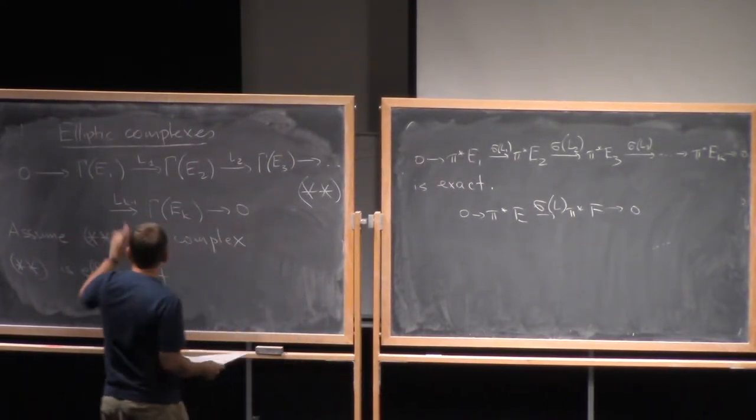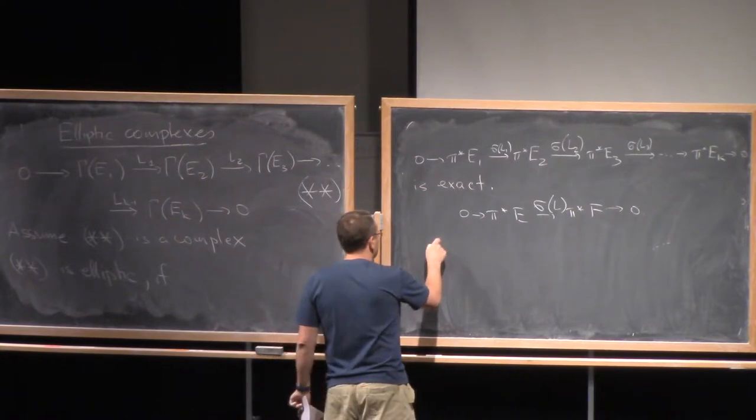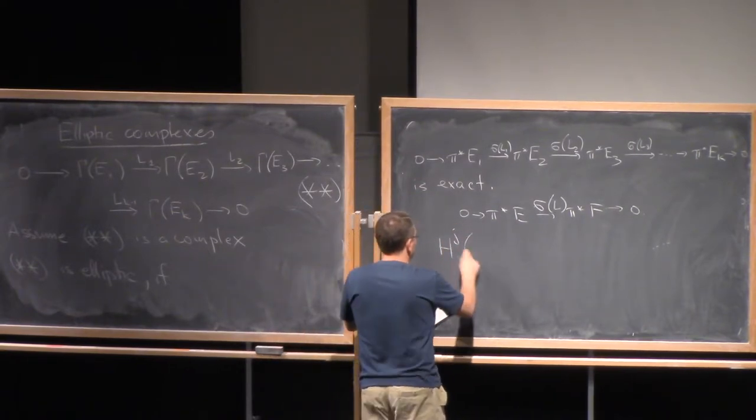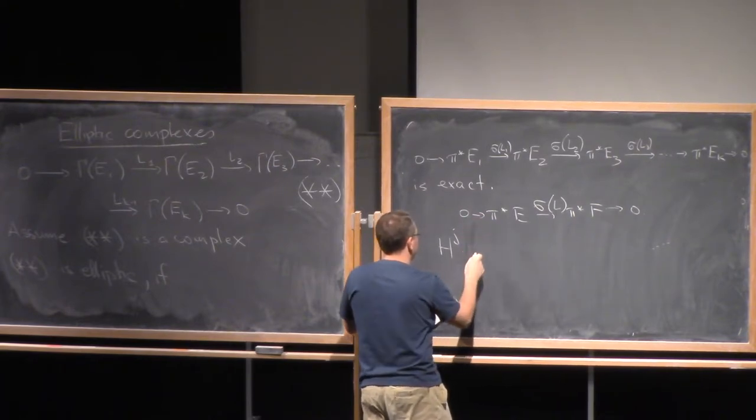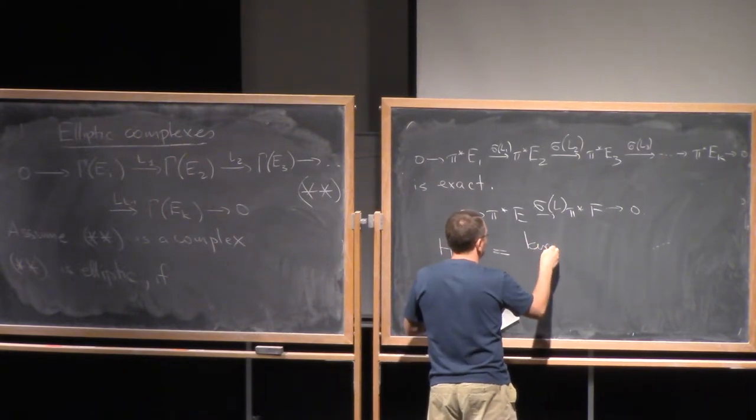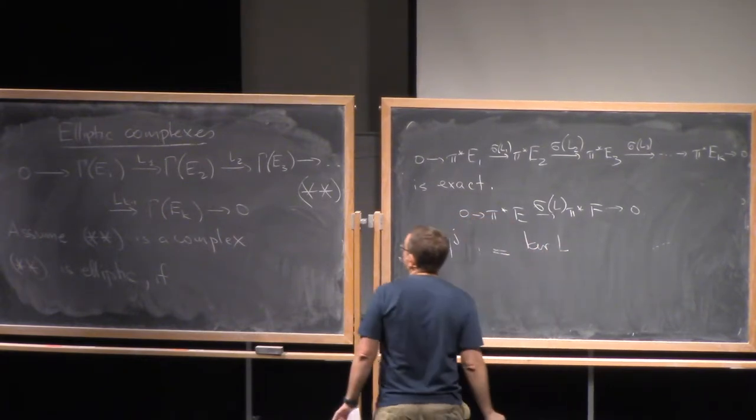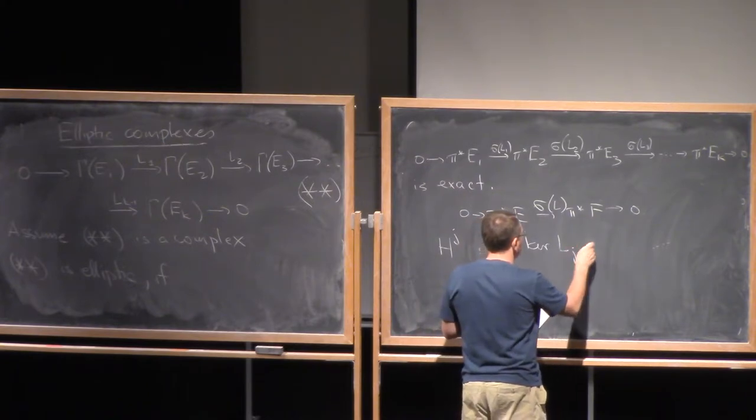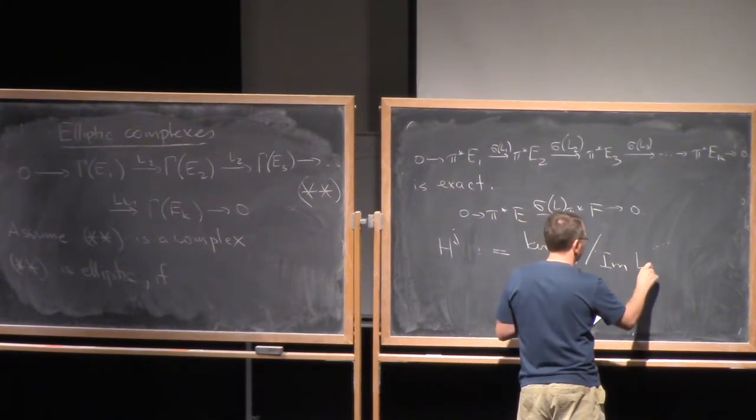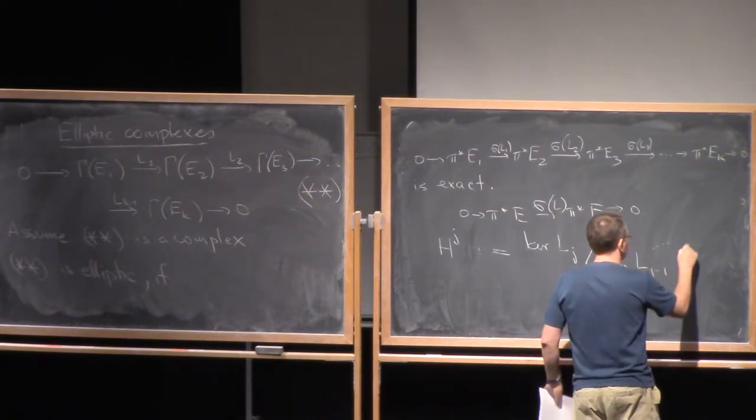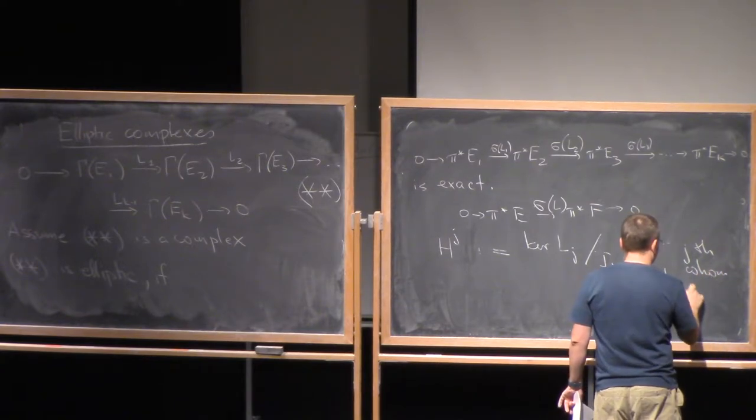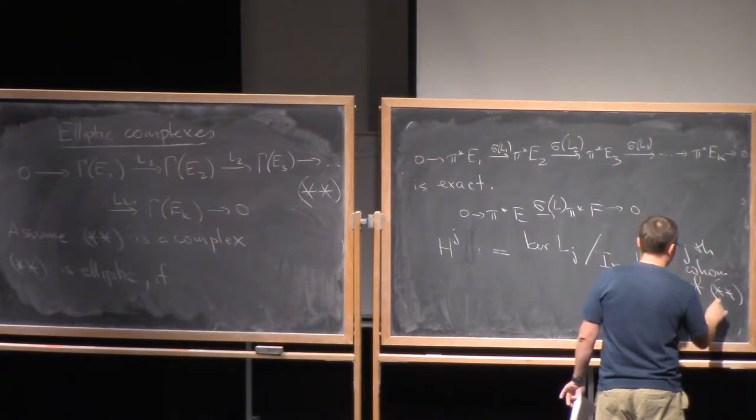All right. Now, since we have a complex, we can define its homology groups. So we have Hj of, well, let me skip the notation. So this is just the kernel of, say, Lj divided by the image of Lj minus 1. So this is J's homology of 2 star.